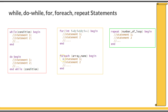Foreach is a SystemVerilog-specific looping construct. It is very similar to the for statement and is typically used along with an array. Foreach will automatically take care of every index in an array. The syntax is: foreach, the array name, then begin and end with the list of statements. For every element of the array, this foreach block will be evaluated.